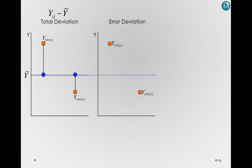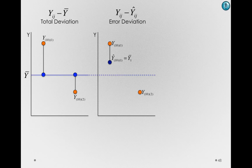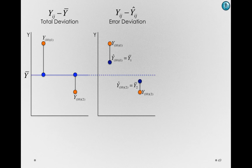Error deviations are simply the difference between what an individual actually paid and what we would predict for an individual — the deviation between Y_IJ and Y-hat_IJ. The Y-hat_IJ, the prediction for any individual, is simply whatever group they're a member of. For Tom, we would predict the group mean for Delta: Y-hat_10-1 equals the mean for the first group. The error deviation for Tom is how far above or below the Delta mean he was. For Joe, who was a member of the Southwest group, Y-hat_10-2 equals Y-bar_2, the mean for the Southwest group. Joe's deviation, just like Tom's, is how much they differ from their own group's mean.